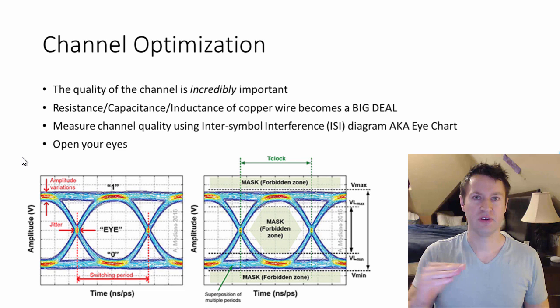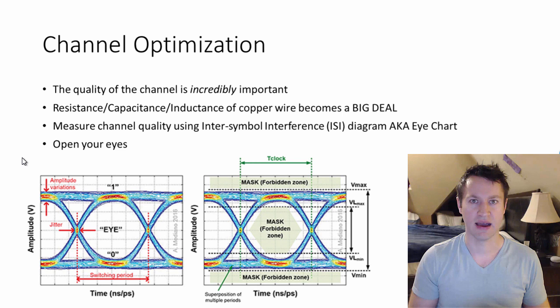The more open you can get that eye to be, the better. That means that you're less likely to have bit errors in your data rate, in your channel at faster and faster data rates. So open eye is better.